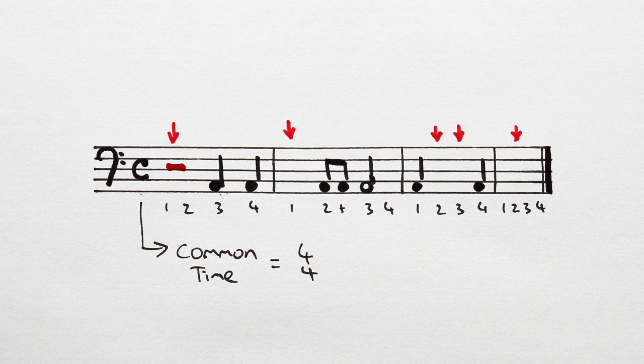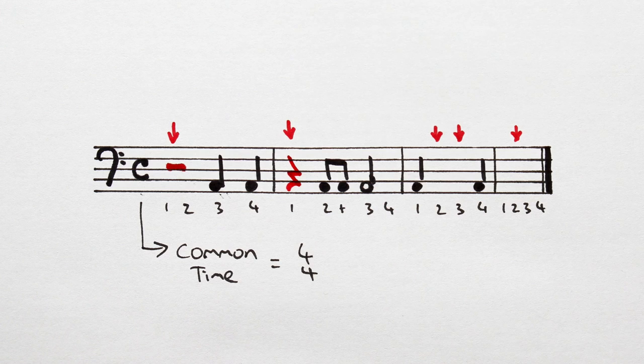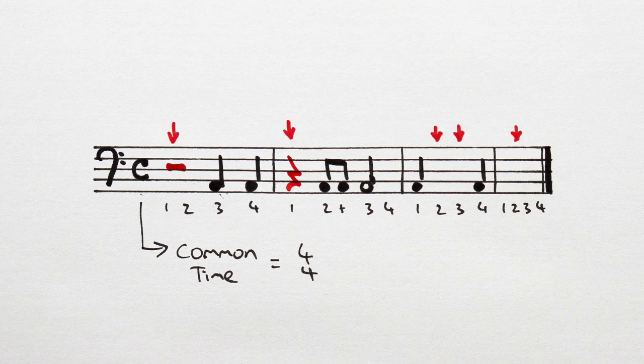In bar 2, only the first beat is missing. The crotchet rest is worth one beat, so let's write it in like so.